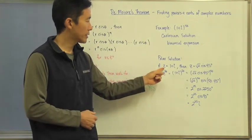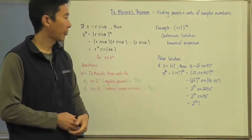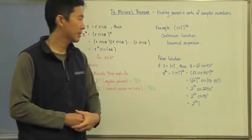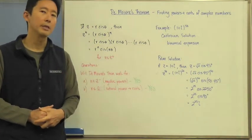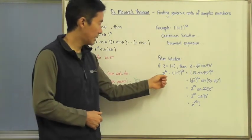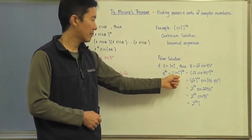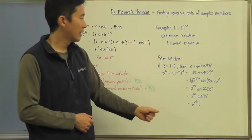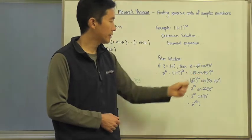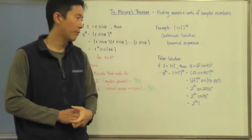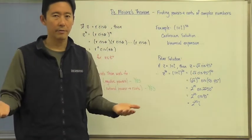So for example, if we go z equals 1 plus i, then we know that z is going to equal the square root of 2 cis 45 degrees. Now z to the 50th, then, is going to be the same thing as 1 plus i raised to the 50th, which changed into its polar form is just the square root of 2 cis 45 degrees, all raised to the 50th power.